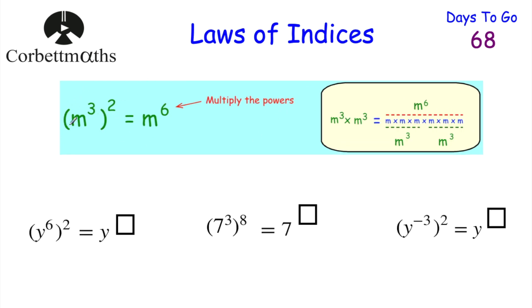Our next law is the power of a power. If you've got a power and then another power, you can multiply the powers together. So if we had M cubed squared, that means M cubed multiplied by M cubed, which gives M times M times M times M times M times M — M to the power of 6. The shortcut is 3 times 2 is 6. So if you've got a power of a power, you multiply the powers together.